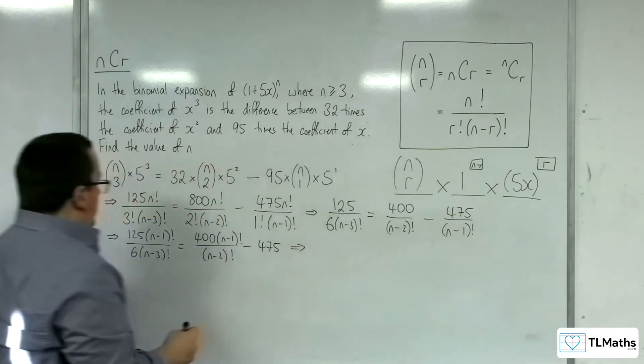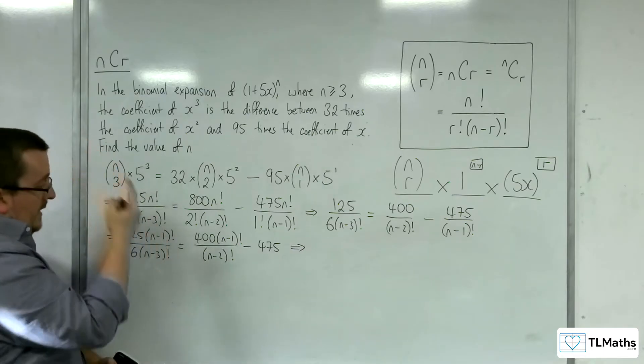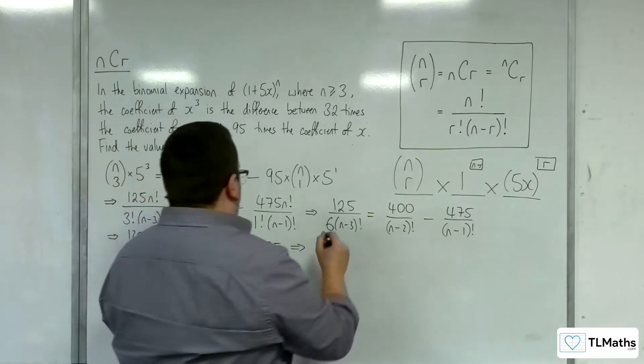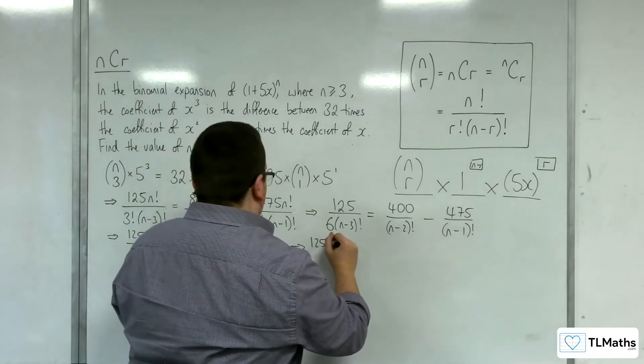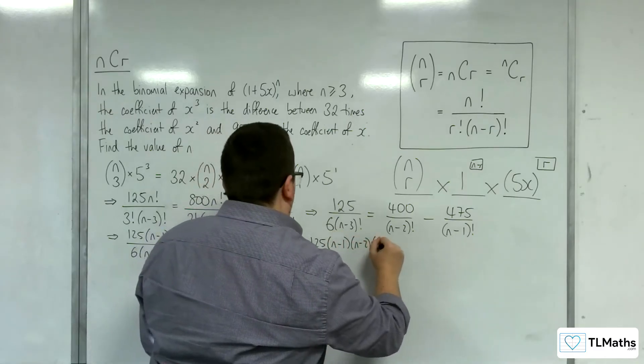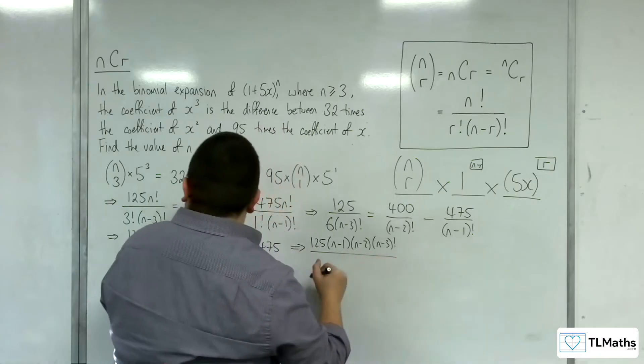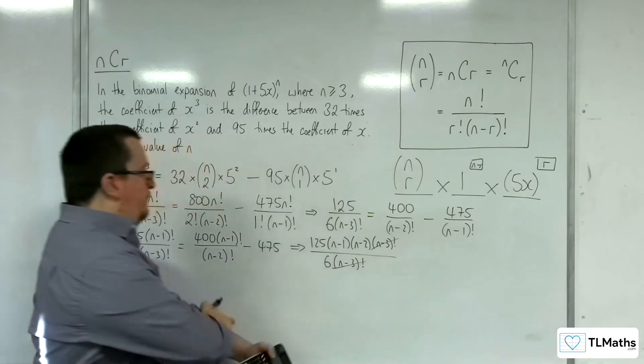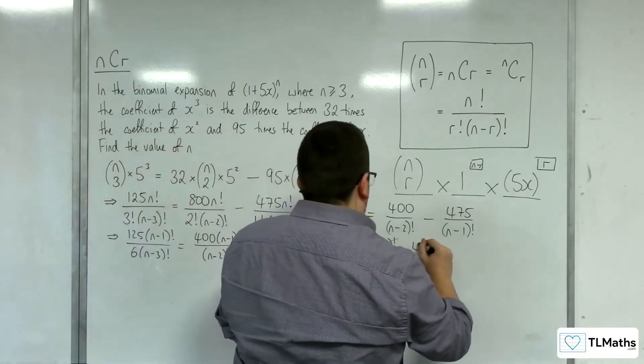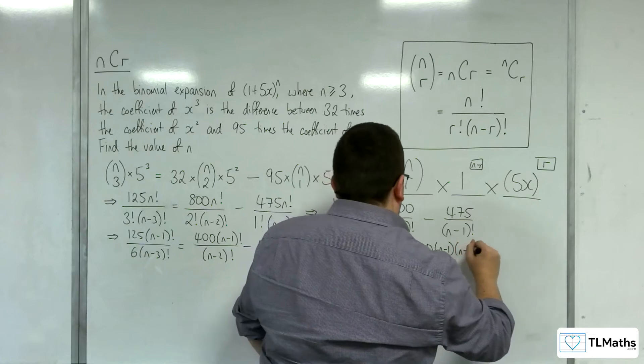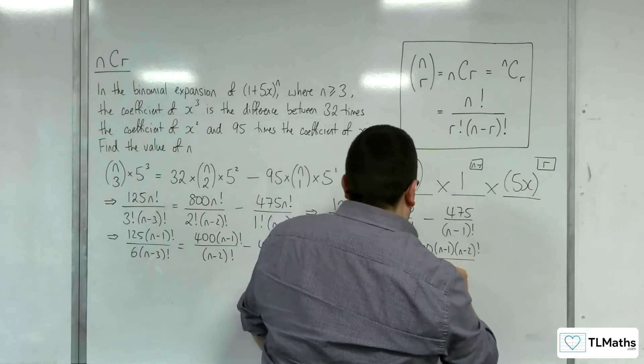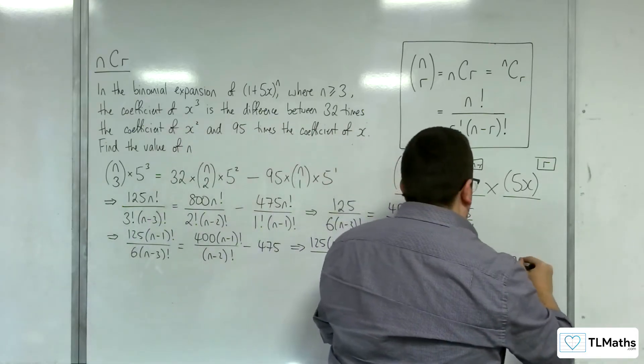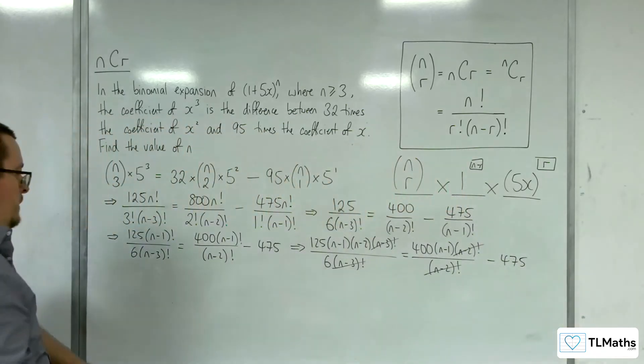So n minus 1 factorial is n minus 1 times n minus 2 times n minus 3 factorial, so the n minus 3 factorials will cancel. So 125 n minus 1, n minus 2, n minus 3 factorial over 6 times n take away 3 factorial, so they're gone, equals 400 n minus 1, n minus 2 factorial over n minus 2 factorial, so they're gone.